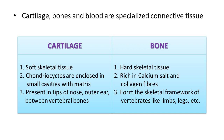Cartilage is generally present at the tips of the nose, outer ear, and between vertebral bones. Bones form the skeletal framework of vertebrates — in limbs, legs, and other parts. The main difference is that cartilage is soft skeletal tissue while bone is hard skeletal tissue, and their composition also differs.